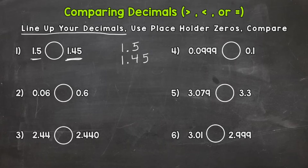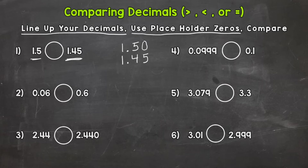Our second step is to use placeholder zeros. When we line those two numbers up they're a little offset, so what we can do is use placeholder zeros so that both numbers go to the hundredths place and they're a little more aligned. Adding a zero to the right of a decimal does not change the value — you are allowed to do that without changing how much that number is worth. It does not work for whole numbers; this is only for decimals.